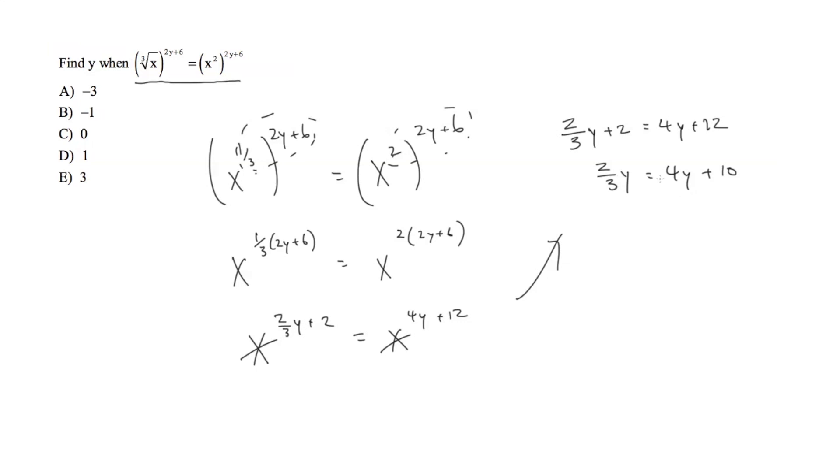So if I multiply everything times 3, we get 2y is equal to 12y plus 30. Subtract 12y on both sides, and we get negative 10y is equal to 30.